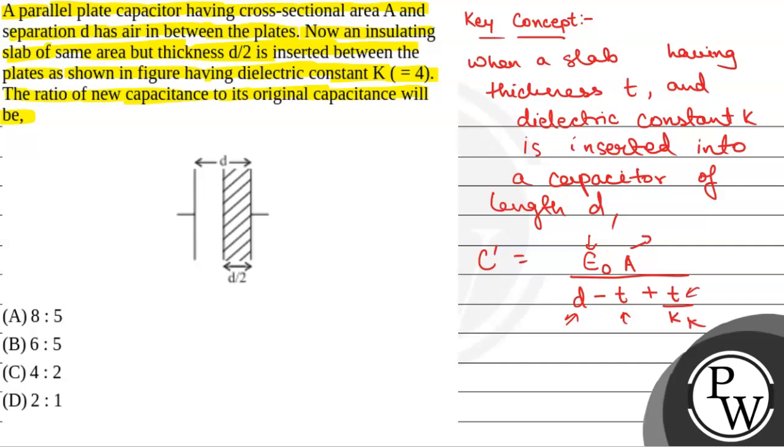Now, applying this formula, we have ck (the capacitance after the insulating slab is inserted): epsilon 0 a by (d minus t), where t equals d by 2. So, d minus d by 2 plus d by 2 divided by k, where k is 4.